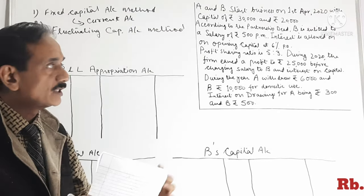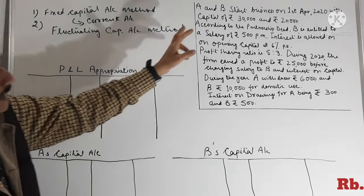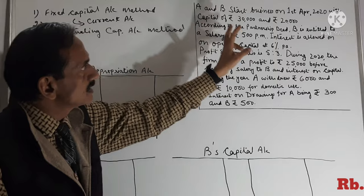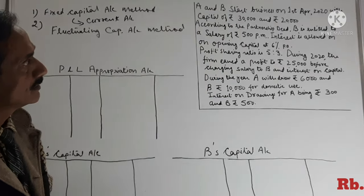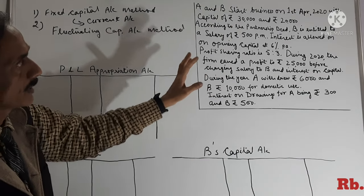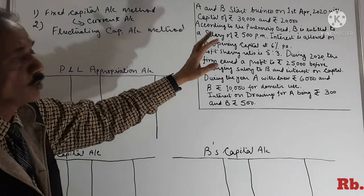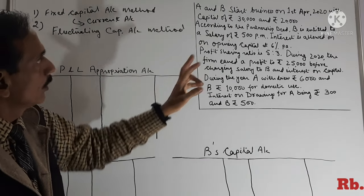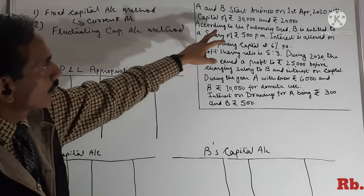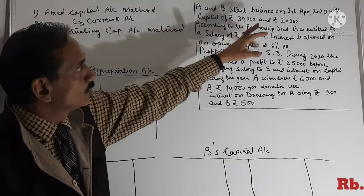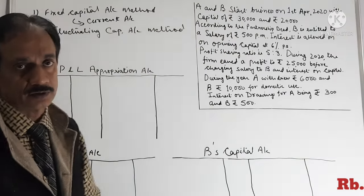This is the illustration: A and B start business on 1st April 2020 with capital of Rs.30,000 and Rs.20,000.